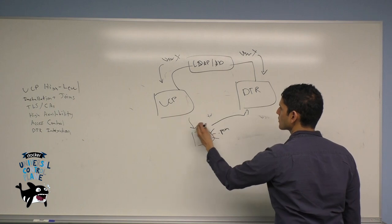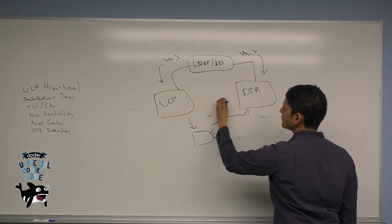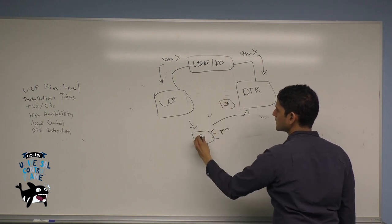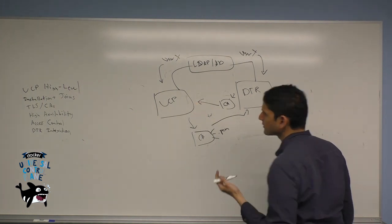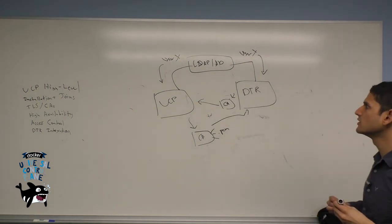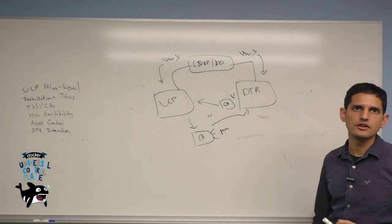Similarly, with DTR you create its certificate authority and upload that into UCP. I'm simplifying this process, but this is how you can get UCP and DTR to both understand each other's transport layer security mechanisms.